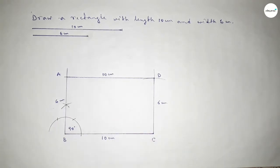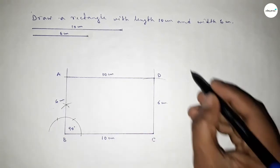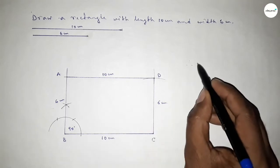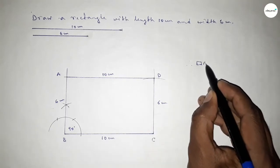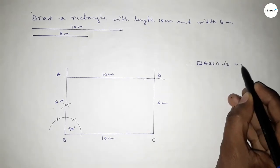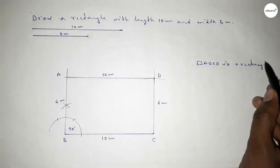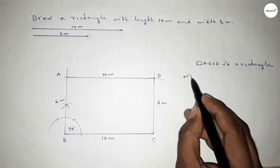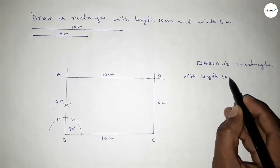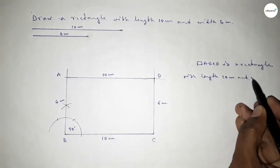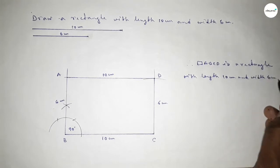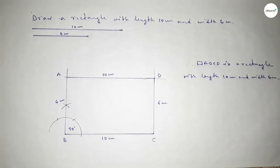Therefore rectangle ABCD is a rectangle with length 10 centimeter and breadth or width 6 centimeter. This is the process to construct a rectangle with length 10 centimeter and breadth 6 centimeter. That's all, thanks for watching, please share it.